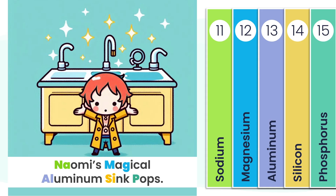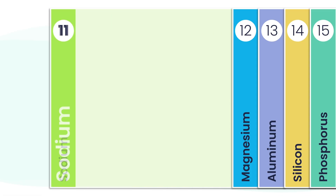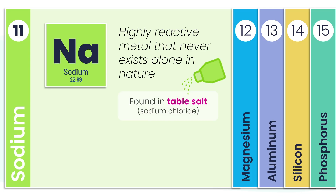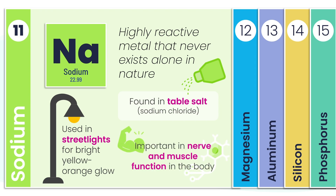Elements 11 through 15 — just remember: Naomi's magical aluminum sink pops. Each word's bold letter gives you a clue: sodium, magnesium, aluminum, silicon, and phosphorus. Let's start with sodium. Sodium is a highly reactive metal, so reactive it's never found on its own in nature. You'll find it in table salt, lighting up street lamps, and helping your nerves and muscles do their job every second.